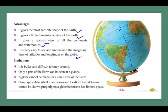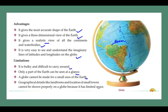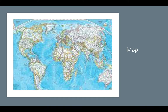The disadvantages or limitations of the globe: as it is very bulky, it is very difficult to carry around. Only a part of the earth can be seen at a glance. A globe cannot be made for a small area of the earth, and geographical details like landforms and locations — those small details — are not available on the globe.